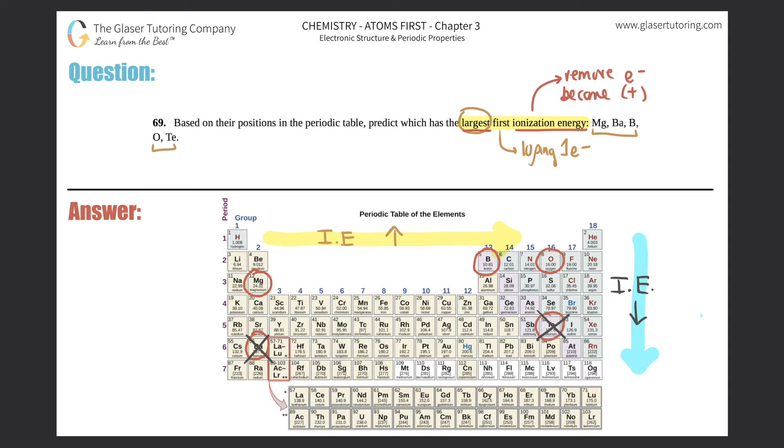It would be oxygen because of your period trend. So which one would have the largest first ionization energy? It would be oxygen. You could also have canceled out magnesium because magnesium is in group three as opposed to these guys which are in group two, but either way you would get to oxygen as being your final answer.